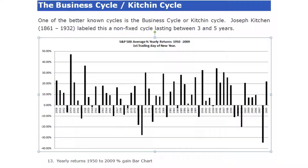The Business Cycle, or Kitchen Cycle, is one of the better-known cycles. Joseph Kitchin, 1861 to 1932, labeled this a non-fixed cycle lasting between three and five years. This is a very old and well-established theory, so I thought it would be worth researching this phenomenon.